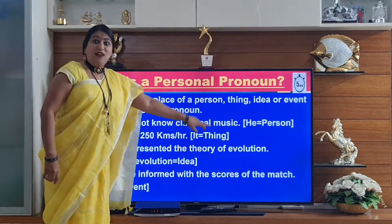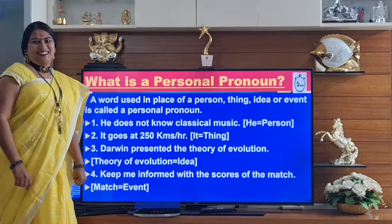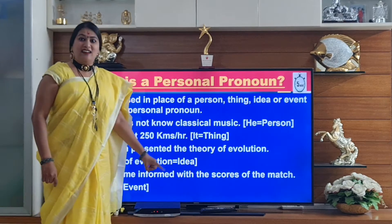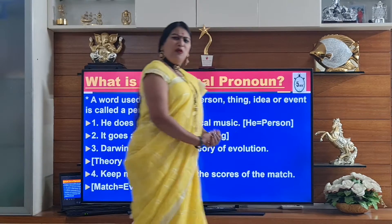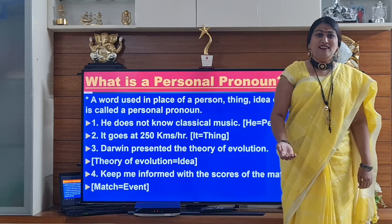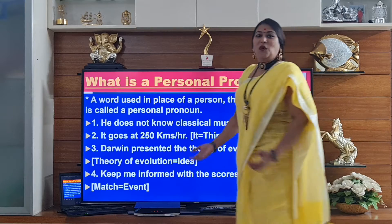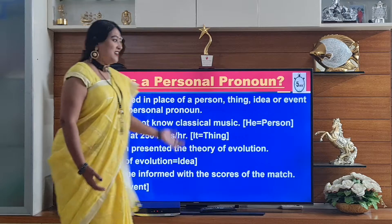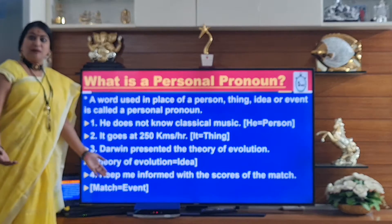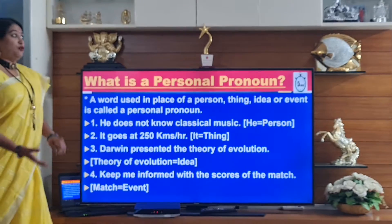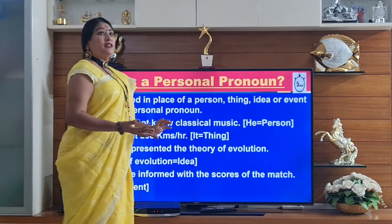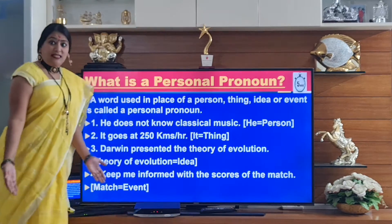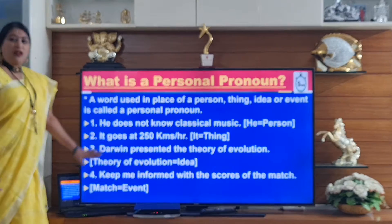And for a thing, what will come? It. And for an idea — Pythagoras theorem, it was whose idea? It was Pythagoras' idea. Darwin's theory — whose idea was that? That was Darwin's idea. So ideas and events — it could be a cricket match, a birthday party, a wedding ceremony, a thread ceremony. Those are our events.